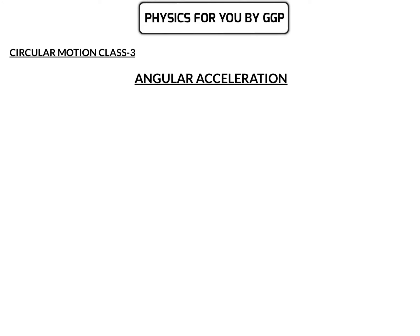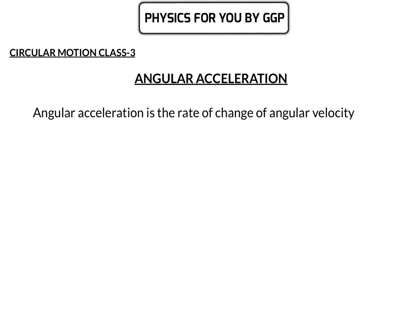Welcome all to circular motion class 3, in which we will discuss about angular acceleration. Angular acceleration is the rate of change of angular velocity. It is represented by alpha and it is a vector quantity.